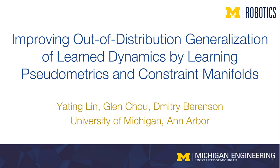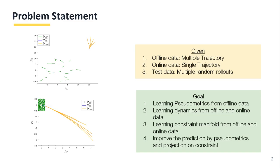In this work, we propose a method for improving out-of-distribution generalization of learned dynamics by learning pseudo-metrics and constraint manifolds. Here is the problem statement.